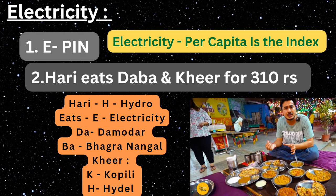The next shortcut is: 'Hari eats daba food and gear for 310 rupees.' 'H' refers to hydro, 'ri' sounds like renewable, and 'E' is electricity — so hydroelectricity is a renewable source. 'Daba' stands for Damodar Valley project, 'Ba' for Bakra Nangal project, and 'gear' (K) for Hubli hydel project. '310 rupees' means there are over 310 thermal power plants in India.